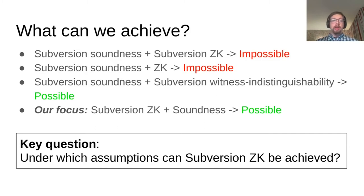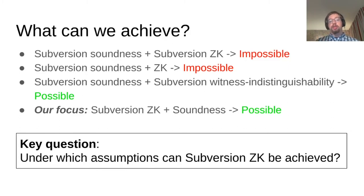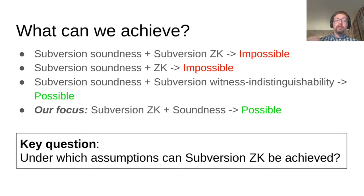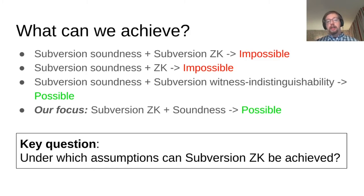So what can we achieve if we allow for the CRS to be subverted by this third party? If we require that both soundness and zero knowledge should remain in the case where the CRS is subverted — aka we have properties of subversion soundness and subversion zero knowledge — this is impossible. And similarly, if we just want subversion soundness but ordinary zero knowledge, this is still impossible. It is possible to get subversion soundness and a privacy-preserving property known as subversion witness indistinguishability, which says that even if the CRS is subverted, no adversary can tell two proofs of the same statement but with different witnesses apart. We will not focus on that in this paper.